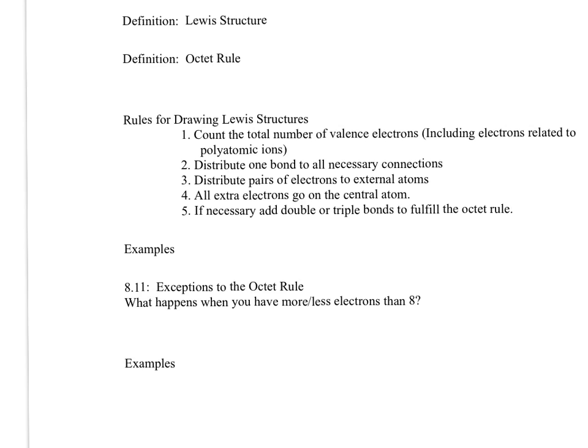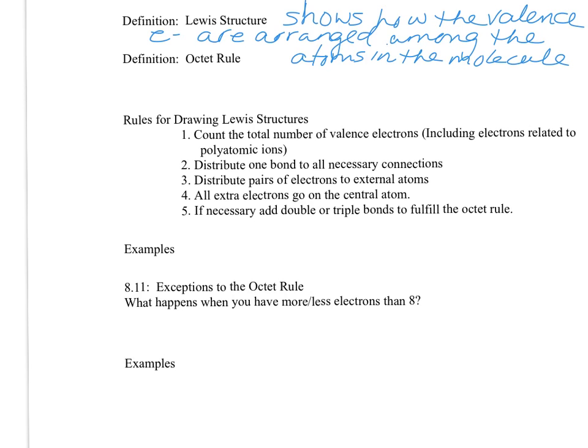Let's first start by defining Lewis structure. The Lewis structure shows how the valence electrons are arranged among the atoms in the molecule. The definition of the octet rule is basically an atom being surrounded by 8 electrons.